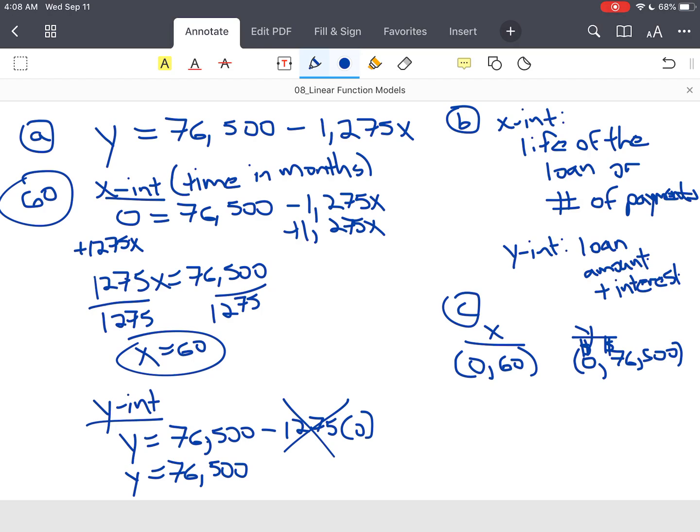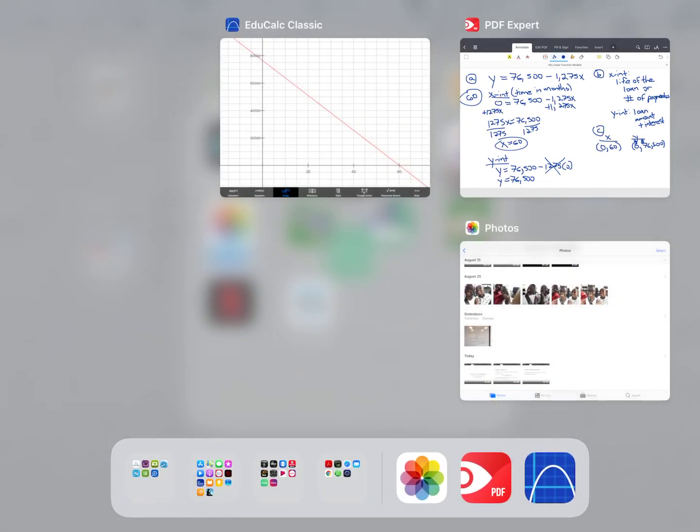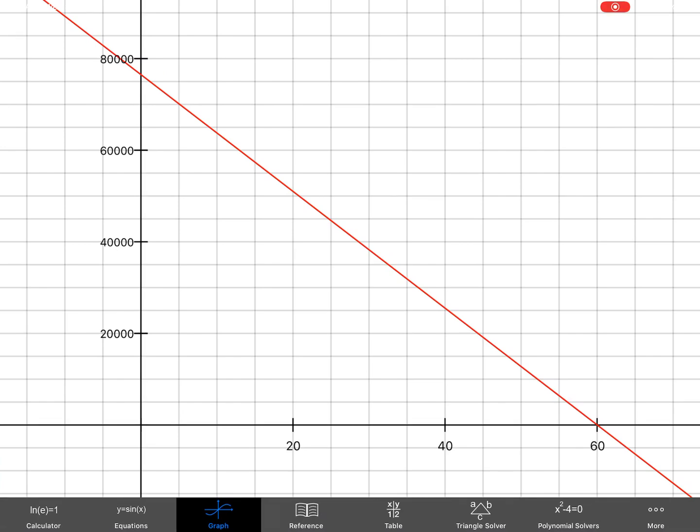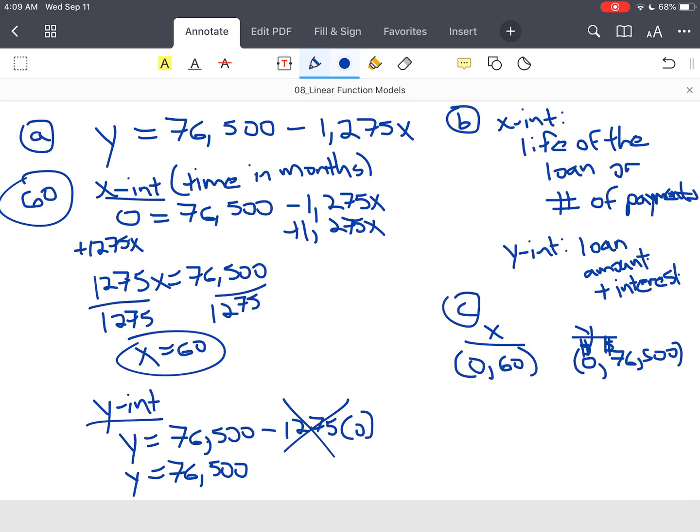And then D, it says use the intercepts to graph. So I'm going to pull up a graph and show you what this graph actually looks like. So here's the graph. Now notice a couple of things. At 60 months, you've got a zero. So you've got an x intercept there. And then on this y axis, at $76,500, you have an intercept. So that makes sense. So that's what your graph should look like. So we did D.